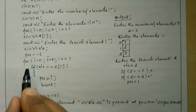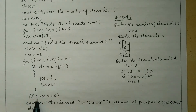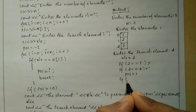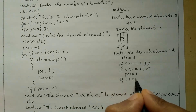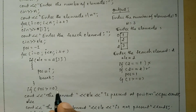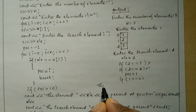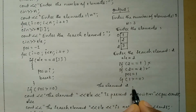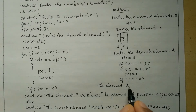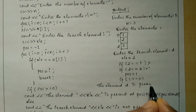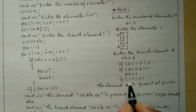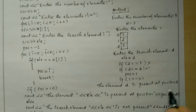Once it is true, control enters the body of the if statement, initializes pos to i, and then encounters break — so control comes out of the looping structure. It then checks: if pos, which is one, is greater than or equal to zero — yes, it is true. So it prints: the element two is present at position one.